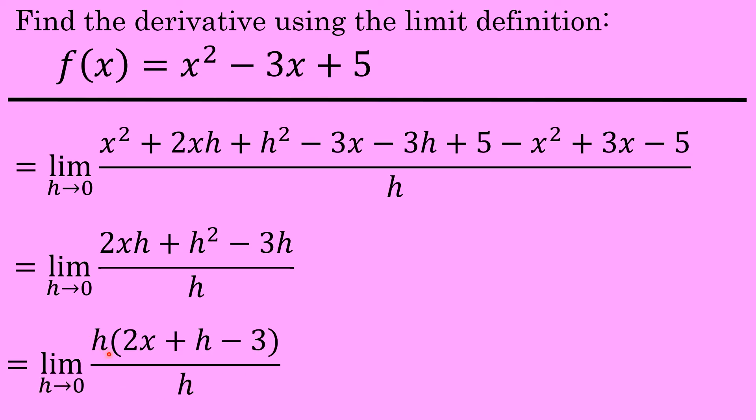And at this point, these factors of h are going to be able to be eliminated. They'll divide away to be 1, which leaves you with just the limit as h approaches zero of 2x plus h minus 3.